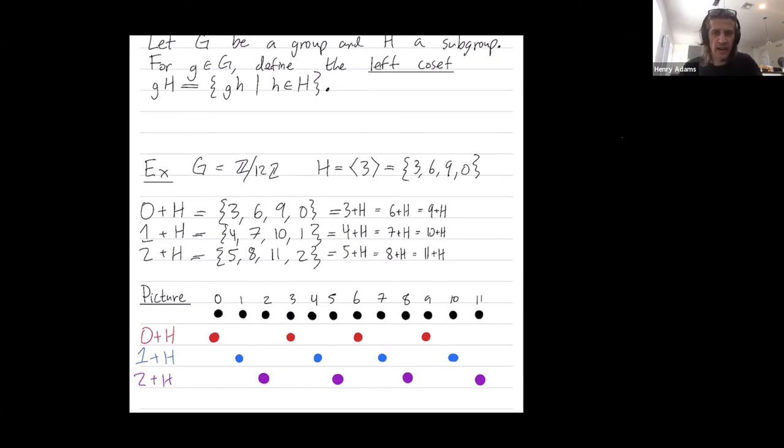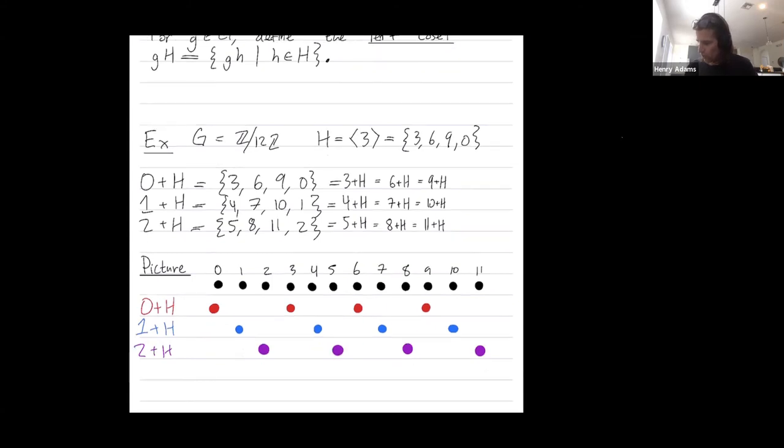So you'll notice some patterns here. One pattern is that the cosets divide the group up evenly. So every element of the group in black appears in exactly one of your distinct cosets. We only have three distinct cosets in red, blue, and purple. And each element of the group appears in exactly one of those distinct cosets.